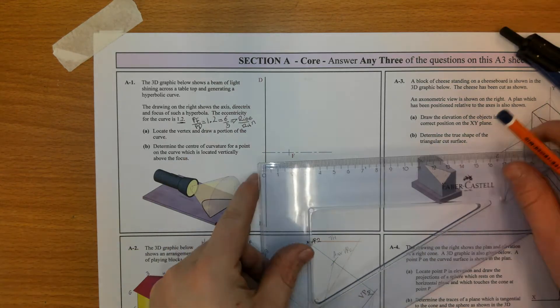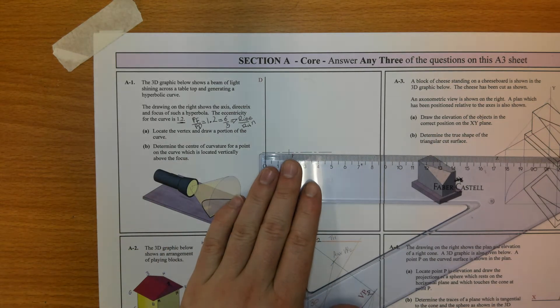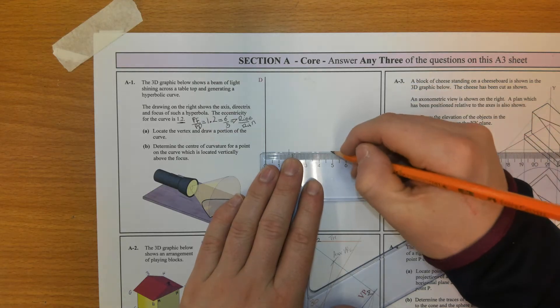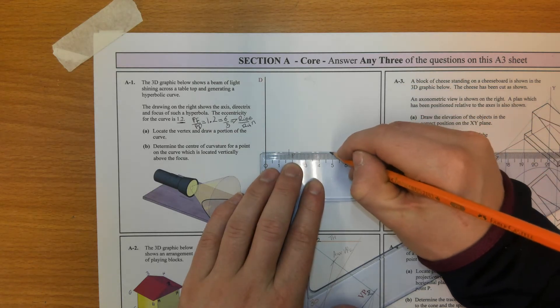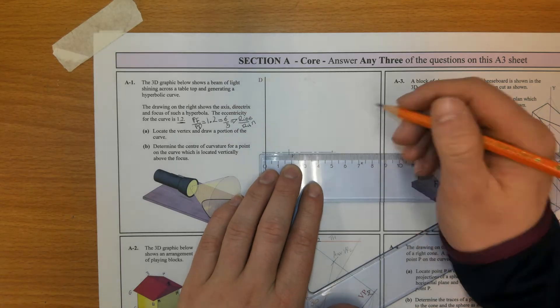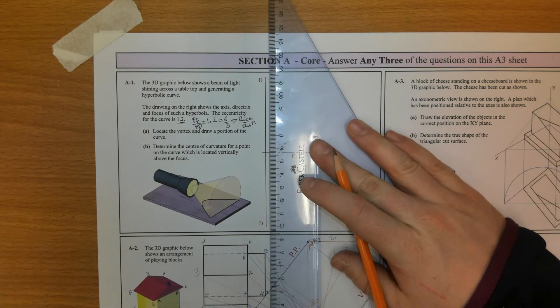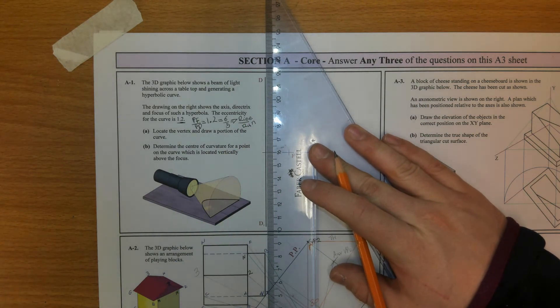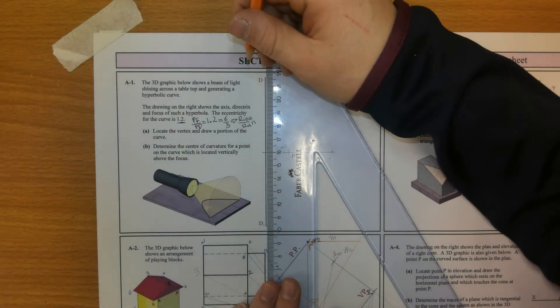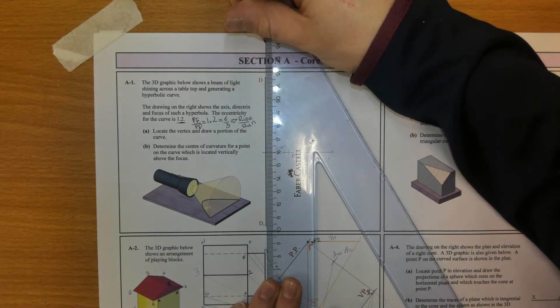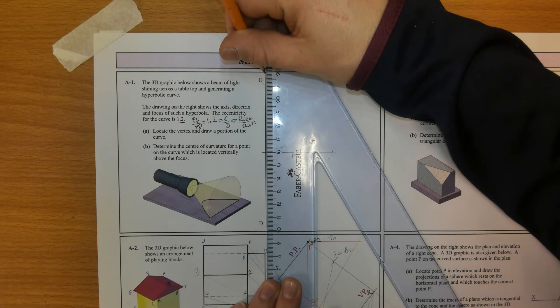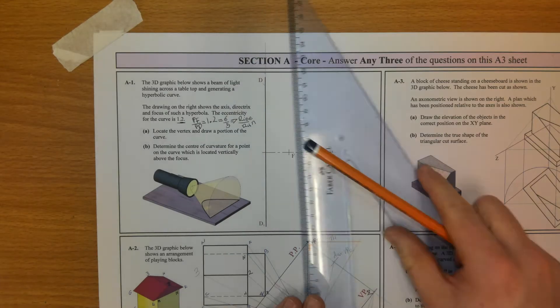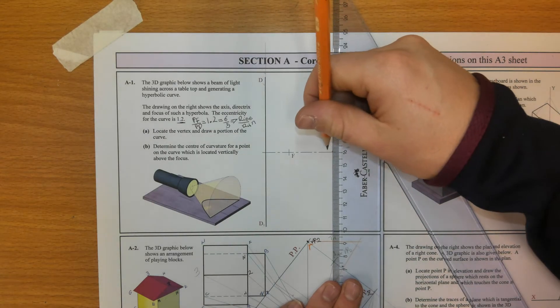I'm going to measure out from the directrix 50 millimeters. So that's the run of the line. And I'm going to measure up 60 millimeters from the axis. And that's the rise of the line.